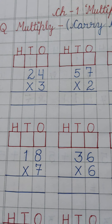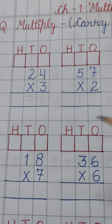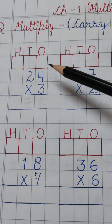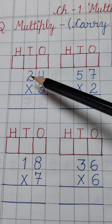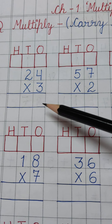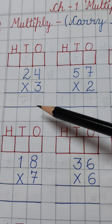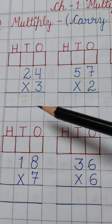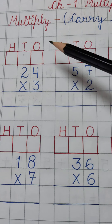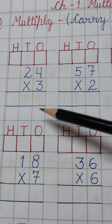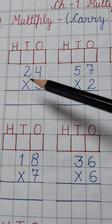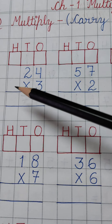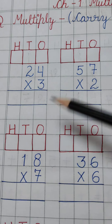We have to multiply 3 by 4 and then 3 by 2. We have to start the sum from the 1's place and then we will move to the 10's place, and then so on.